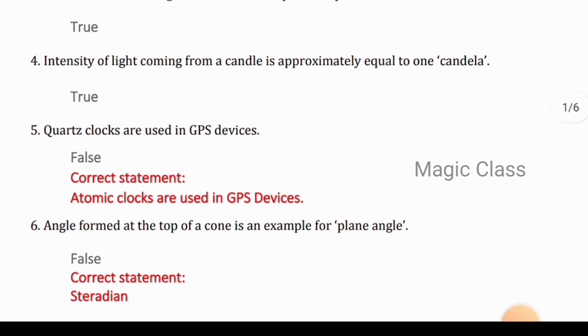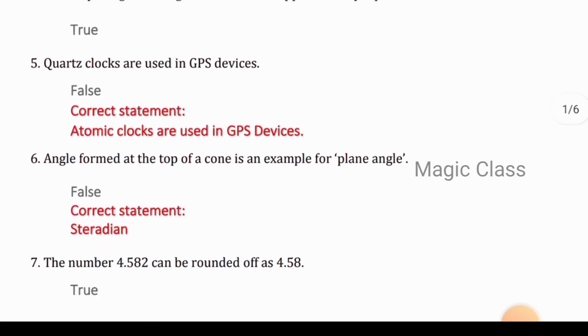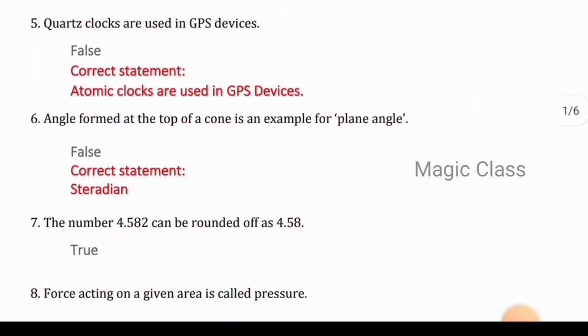Question 4: Intensity of light coming from a candle is approximately equal to one candela. Answer is true. Question 5: Quartz clocks are used in GPS devices. Answer is false, because atomic clocks are used in GPS devices.